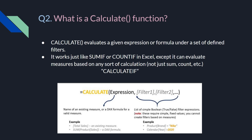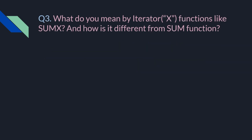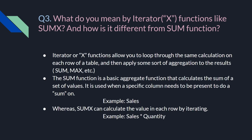The next question is: what do you mean by iterator or X functions like SUMX, and how is it different from the SUM function? This is also a very important question. Basically, iterator or X functions allow you to loop through the same calculation on each row of a table, and then apply some sort of aggregation to the results — which can be SUM, MAX, etc. So basically, they iterate through every row.